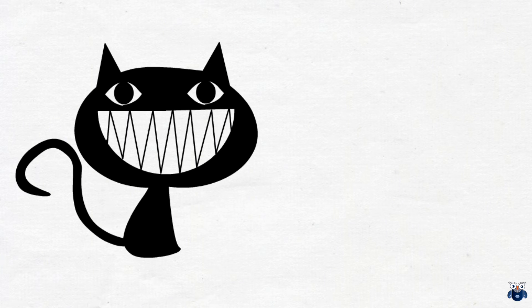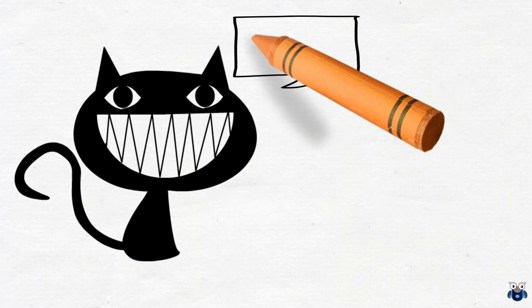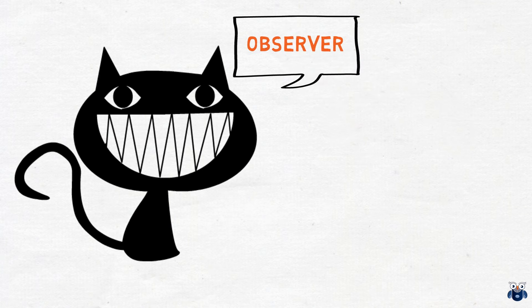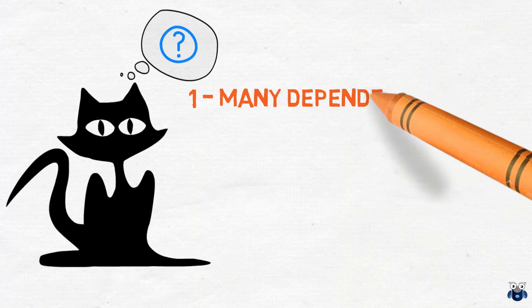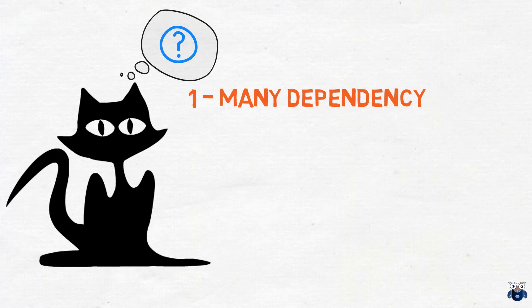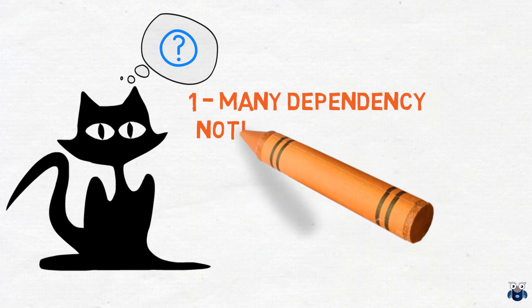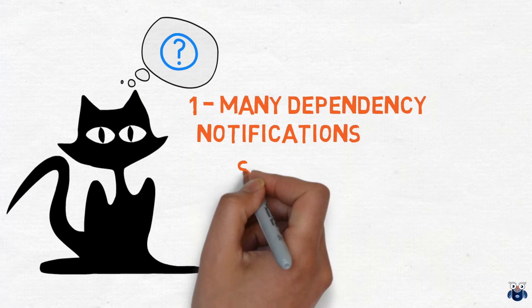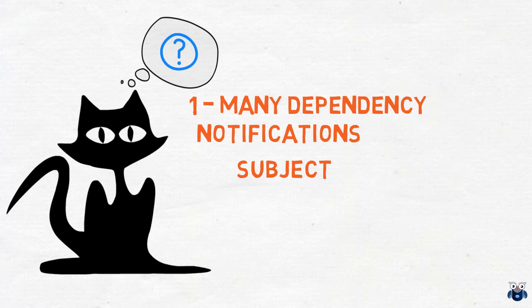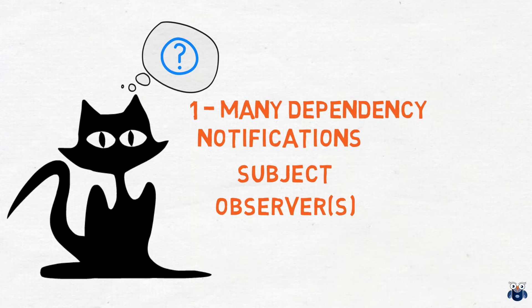Hi guys and welcome to another Design Pattern video. In this video I am going to demonstrate the Observer Design Pattern in Swift. This pattern is used where there is a one-to-many dependency between objects, so that when one object changes state, all its dependents are notified automatically. The key players in this pattern are the subject and the observer. A subject may have any number of dependent observers, and all observers are notified when the subject undergoes a change of state.